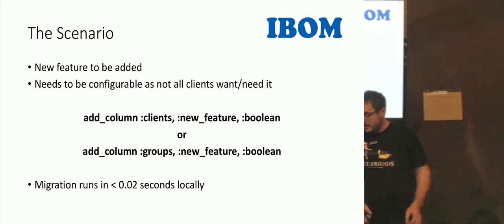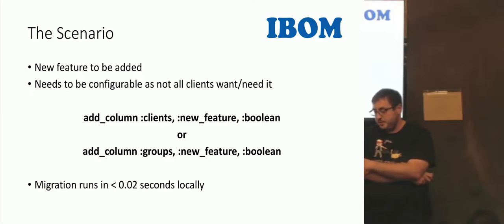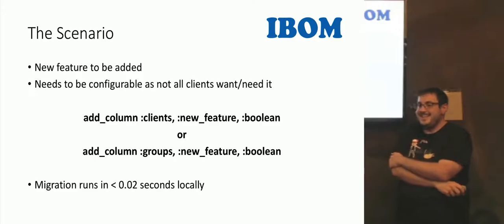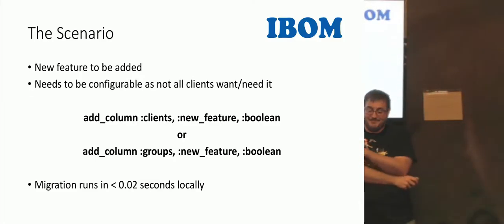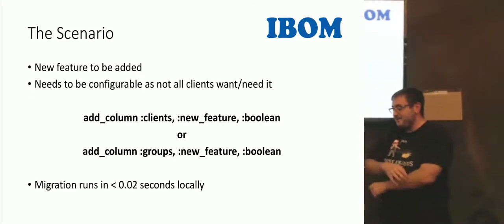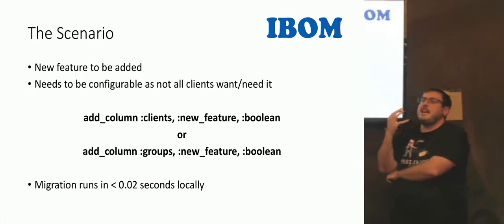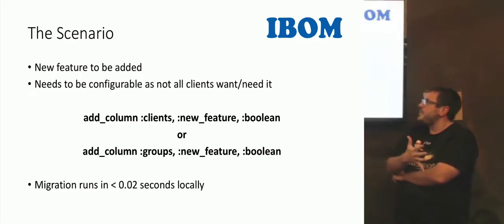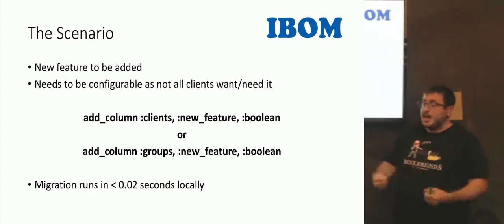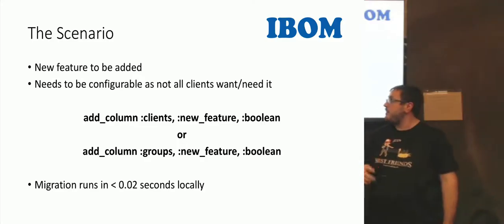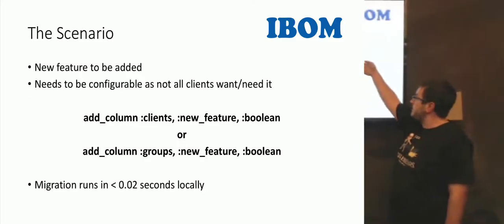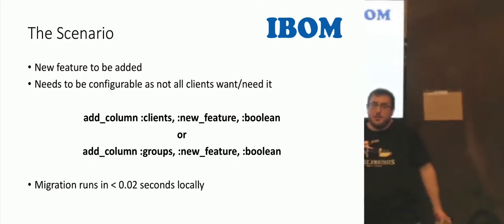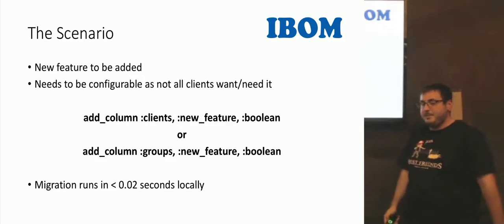Here's the scenario: sales just sold a new client, and we need a new feature. We agree — or are forced — to add the feature, and we decide not every client will want it. Maybe they want a modified version of the existing feature. So what do we do? We add another column to clients, or add another column to groups — another bool, whatever. Here's a common-looking migration, depending on which table you want to hit. It runs in less than 0.02 seconds locally. Ship it.